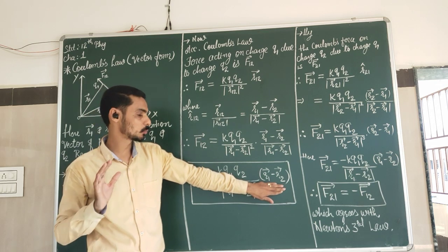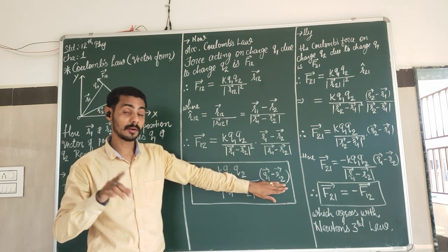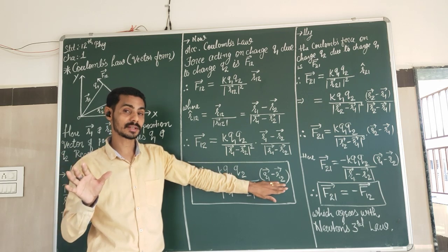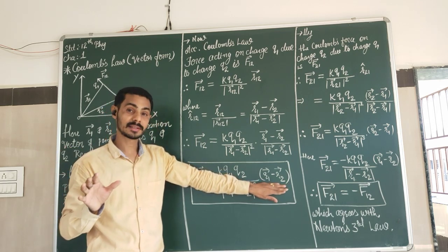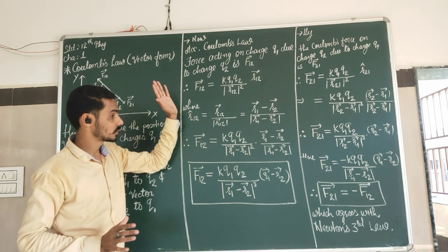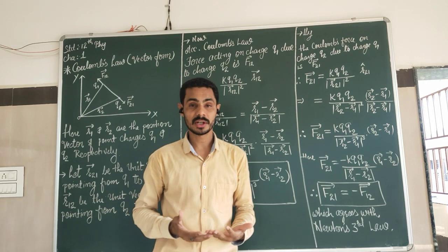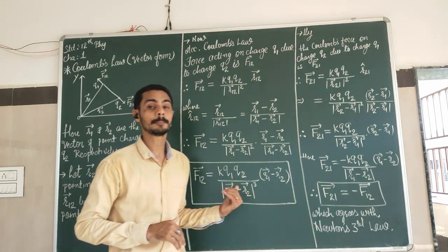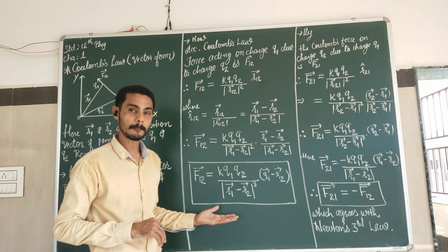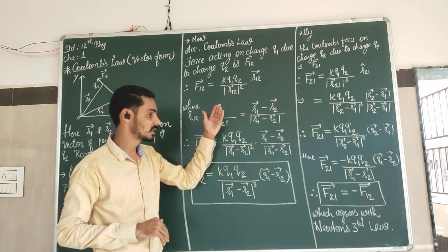During calculation, when position vectors of charge particles are given, be careful: X components calculate with X, Y with Y, and Z with Z. The axis components must calculate with the same axis component. We are deriving the formula for repulsive force, but the formula should be general — it should also work when two opposite charges come. We will see that at the end.